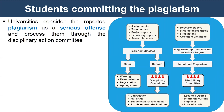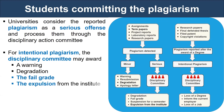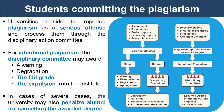Universities consider reported plagiarism cases as severe offenses and process them through the disciplinary committee. For intentional plagiarism, the disciplinary committee may award a warning, recommend a degradation of the awarded grade, award a failed grade, or expulsion from the institute. The university may also penalize alumni by cancelling the awarded degree in severe cases, and the same may be notified to the current employer, resulting in a loss of job.